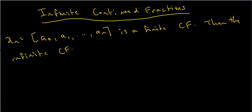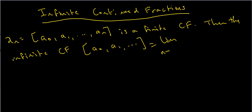I'll write this infinite continued fraction as [a0, a1, ...], and that's the limit as n goes to infinity of x_n. So it's exactly the same as what we saw before, except this one doesn't actually end. It's quite easy to prove that this limit exists, but I won't do it in this video.